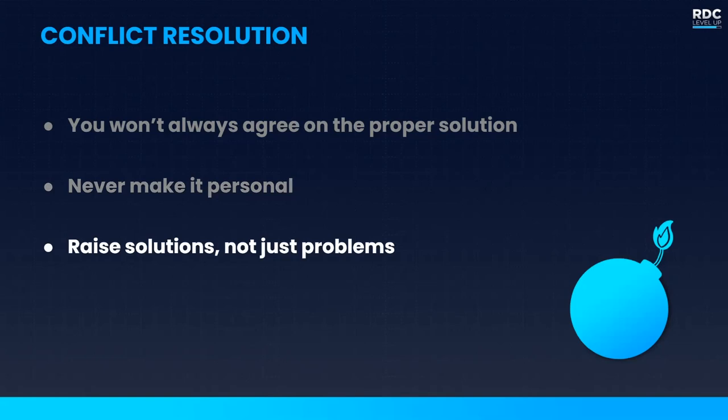This is kind of the golden rule for a game designer: you should always be seeking to raise solutions, not just problems. You don't want to be the person in the room simply saying 'no, that won't work.' You want to be saying 'I'm not sure if that will work, but what if we did this instead?' For any problem, you should always be seeking to present some sort of solution — even if it's not the best one — because presenting solutions moves the discussion forward and shows you're trying to work with the team.